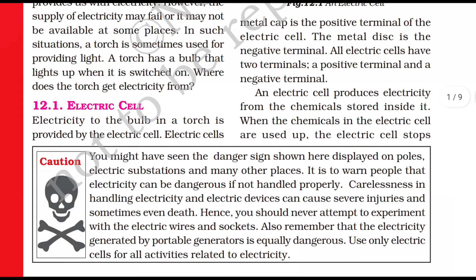An electric cell produces electricity from chemicals stored inside it. The electric cell has a lot of chemicals inside, and electricity is produced through these chemicals. When the chemicals in an electrical cell are used up, the cell stops working and we need to replace it.